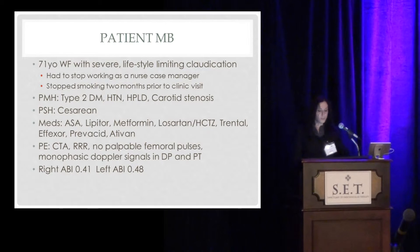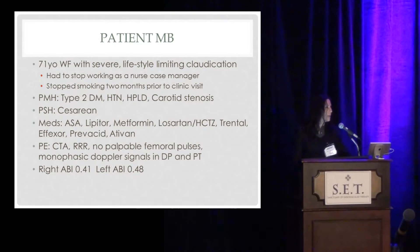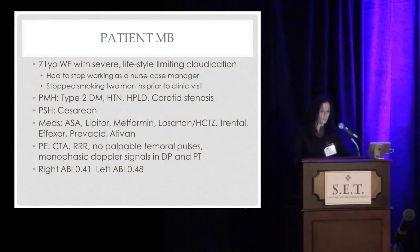On physical exam, she had regular rate and rhythm, no palpable femoral pulses, and she had monophasic signals in her dorsalis pedis and posterior tibial. Her ABIs had been completed at her outside vascular surgeon's office and showed significant ischemia at 0.41 and 0.48.